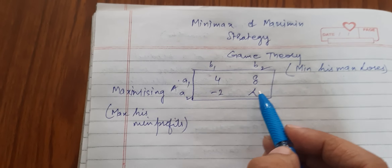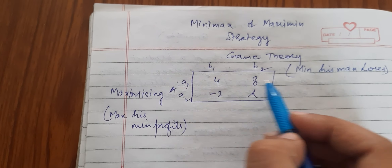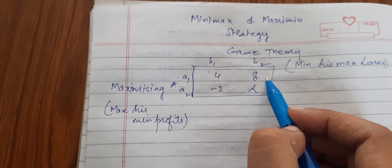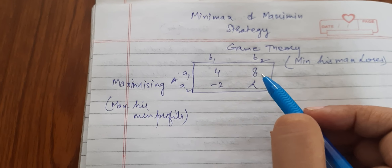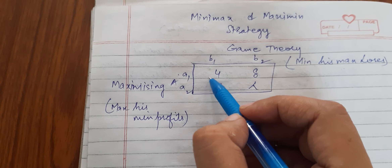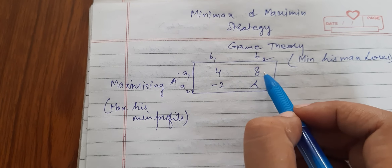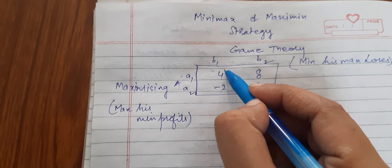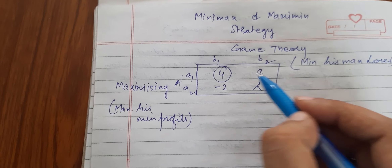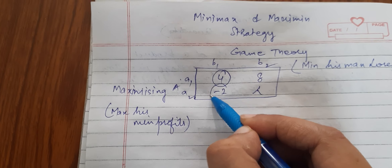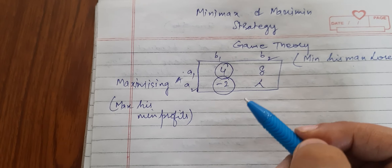So what does the gaining player always do? He always chooses the minimum strategy, and then sees which is the largest among those. So row-wise, we always circle the minimum strategy.